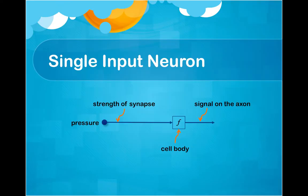Our brain has a hundred billion neurons. We will just take a look at only one neuron here. When there is a pressure, the single input neuron calculates the pressure as a signal and sends the signal to the next neuron.